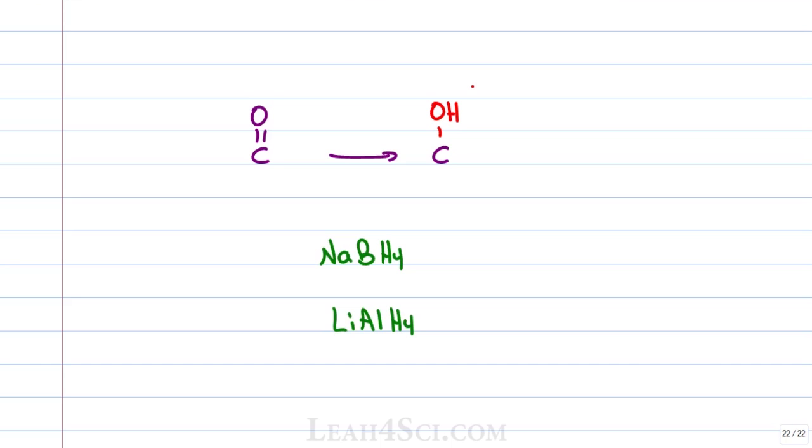When you understand why they differ and how they react, you won't have to memorize and you won't be confused. We learned that NaBH4 is the weaker reducing agent and LiAlH4 is the stronger reducing agent.